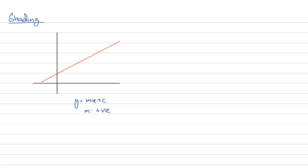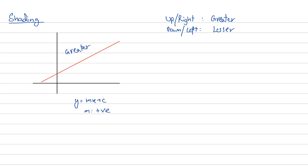What you need to remember is that anything that's above or towards the right is greater, and anything that's down or towards the left is lesser. So the region above a positively sloping line is going to be the region greater than the equation of the line, and the region below the line is going to be the lesser region. We'll discuss whether to use strictly greater than or greater than or equal to later - first let's get the fundamentals right.